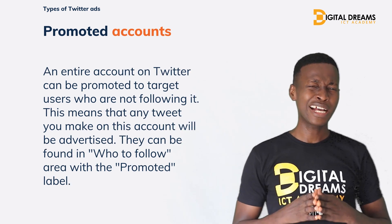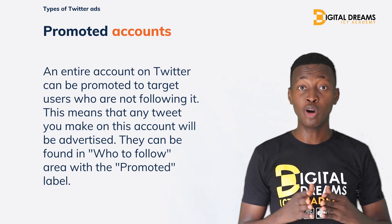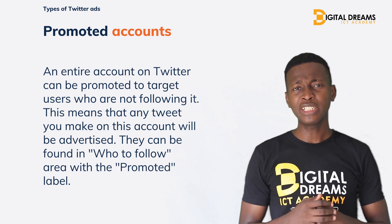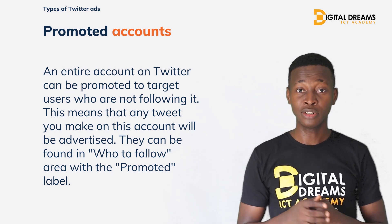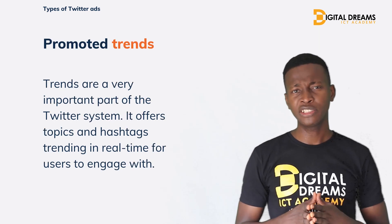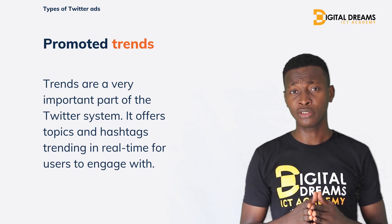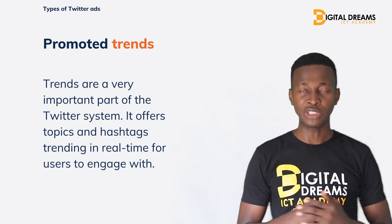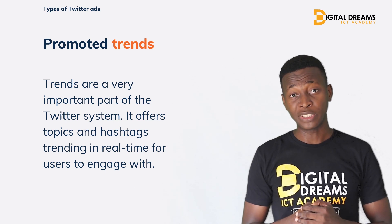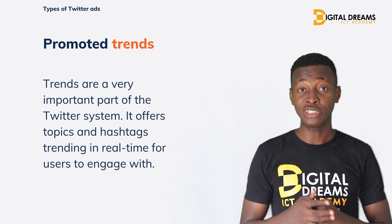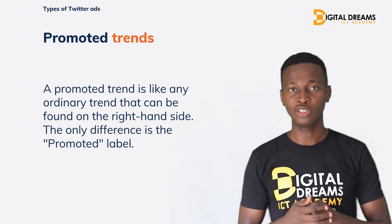Promoted accounts: an account on Twitter can be programmed so that whatever it tweets will be promoted to more people, including those who are not following it. Promoted accounts can be found in the normal who-to-follow section but with the promoted symbol at the lower half area. Promoted trends: because trends are a big deal on Twitter, a particular trend can be promoted by a user so that people who tweet, engage, comment, retweet, share, or like topics pertaining to that trend help promote it. Promoted trends can also be found in the trending section but with the promoted symbol written underneath.